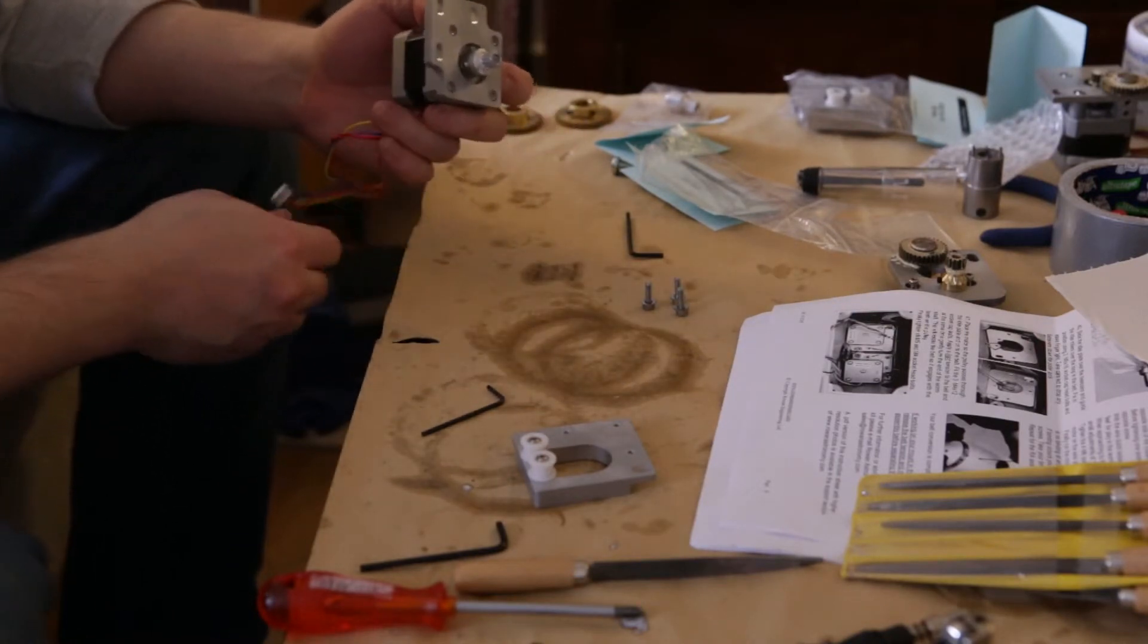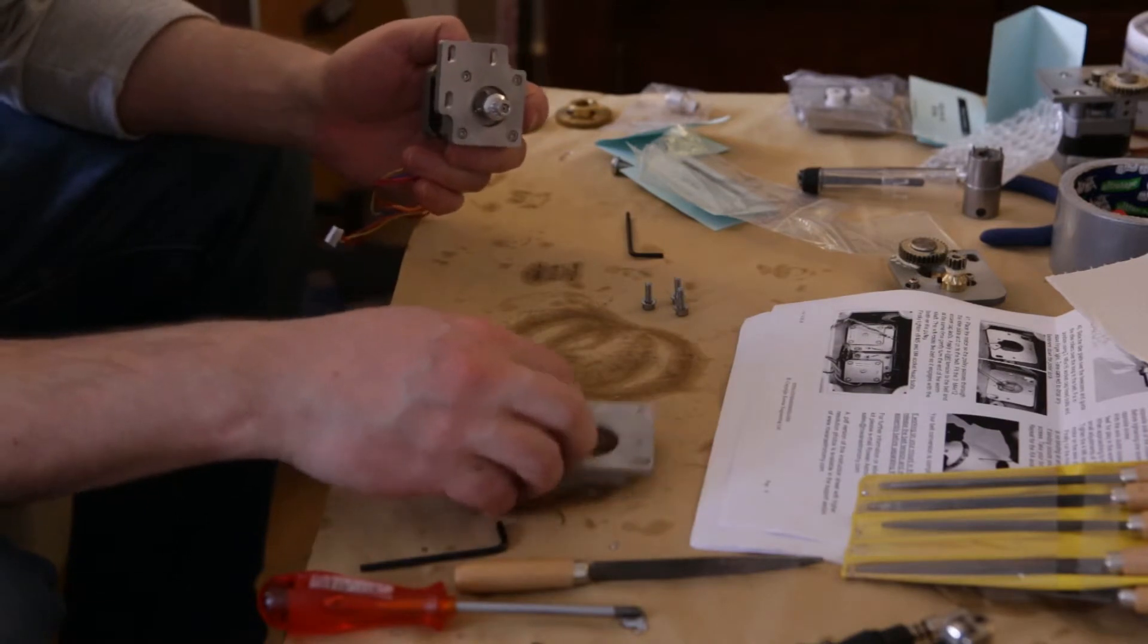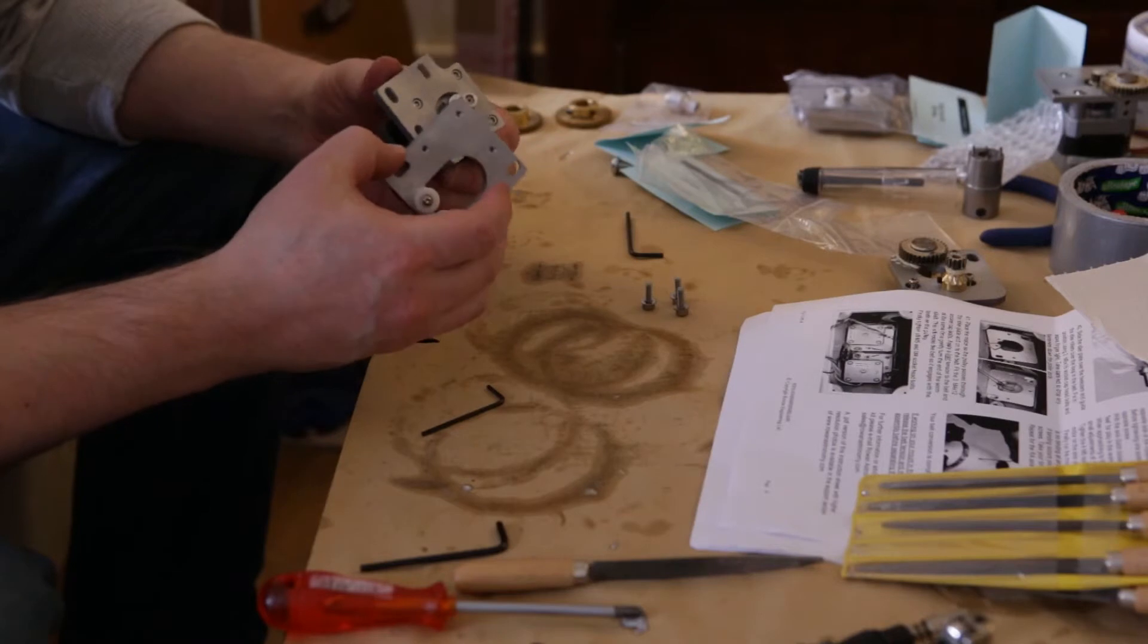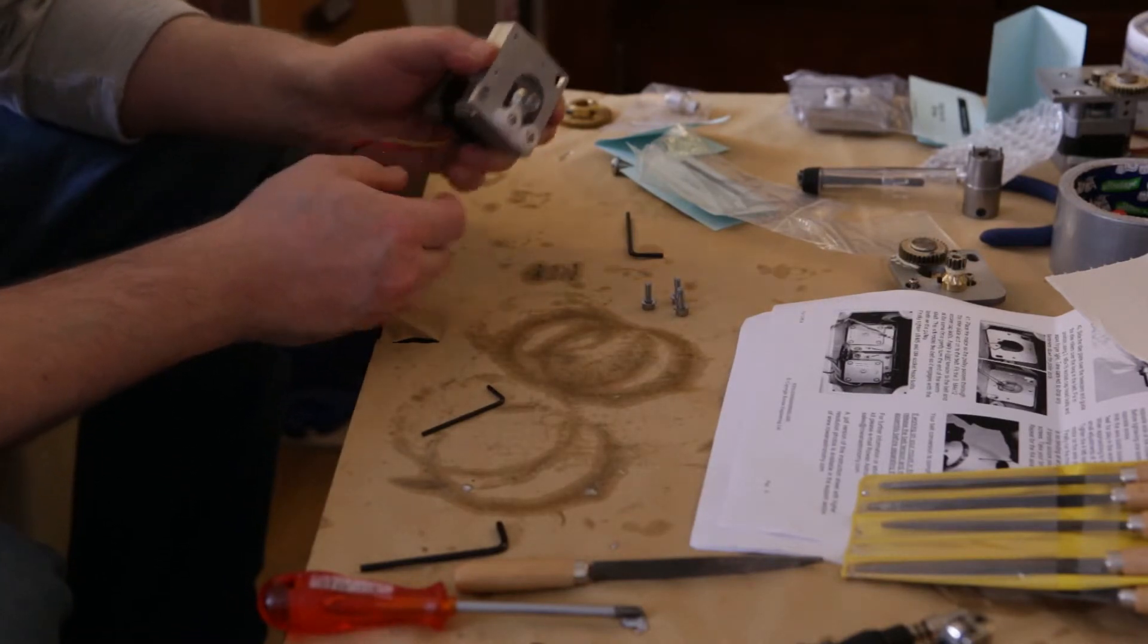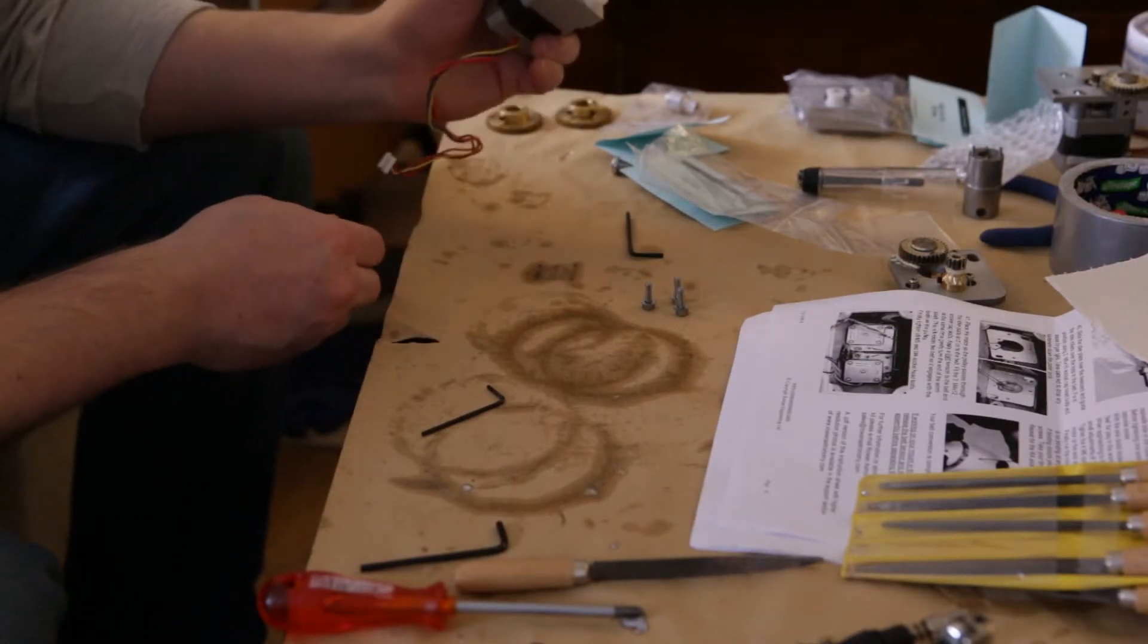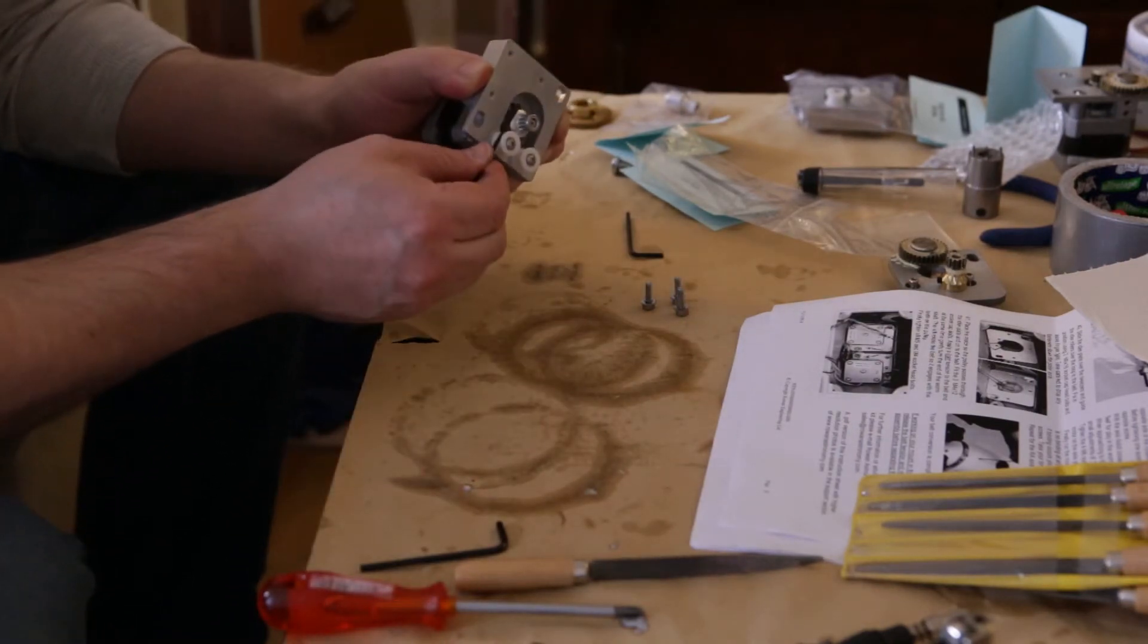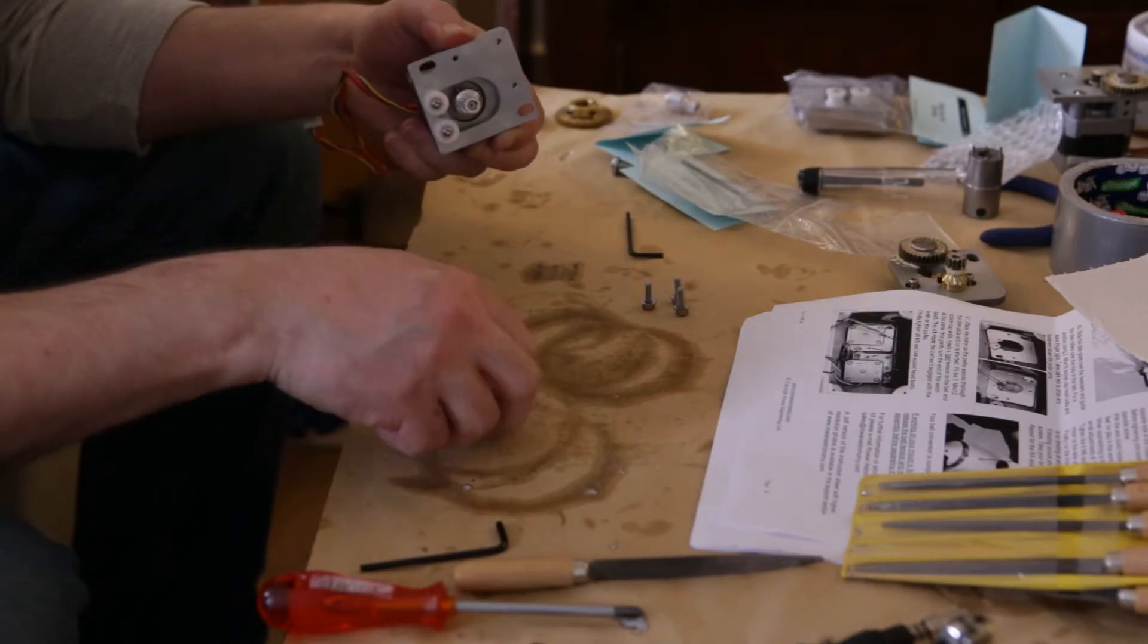So that's in. Before we tighten the grub screws, we're going to have to adjust the position of it, which is another pulley to match the height of the pulley. Push that down a little bit more.